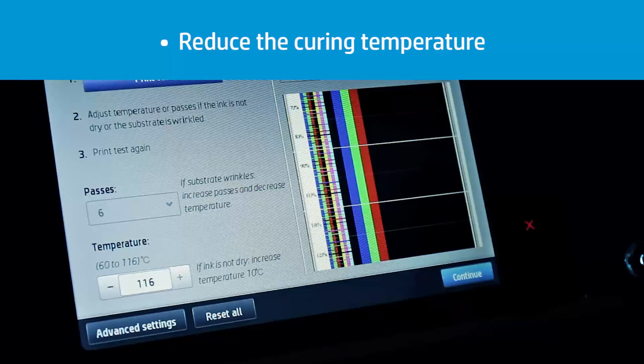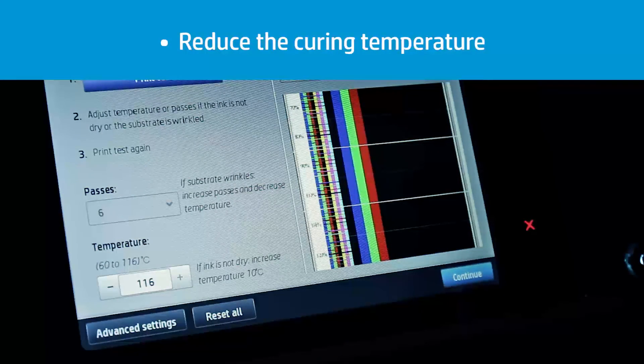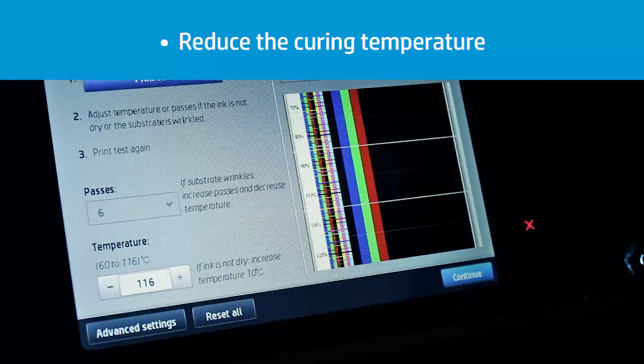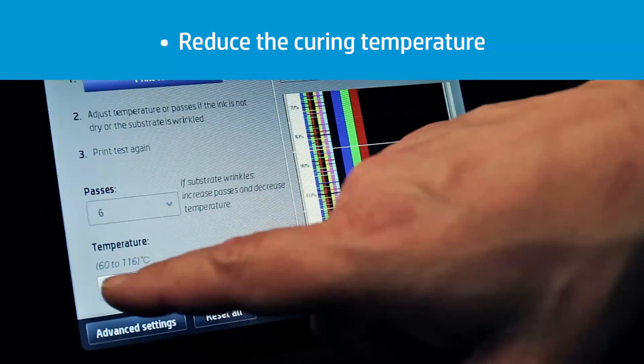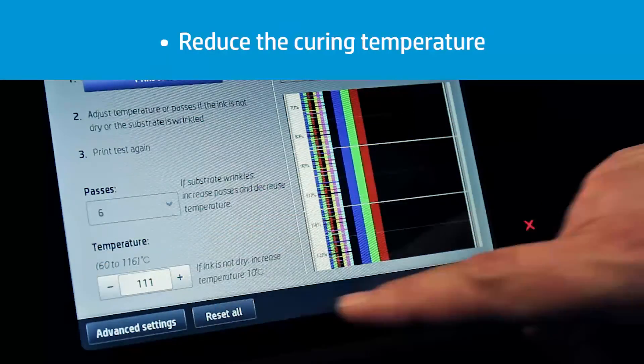If compensation is not a good solution for any reason, then decrease the curing temperature setting in the substrate preset in steps of 5 degrees Celsius, 9 degrees Fahrenheit. Repeat this operation until the deformation is acceptable.